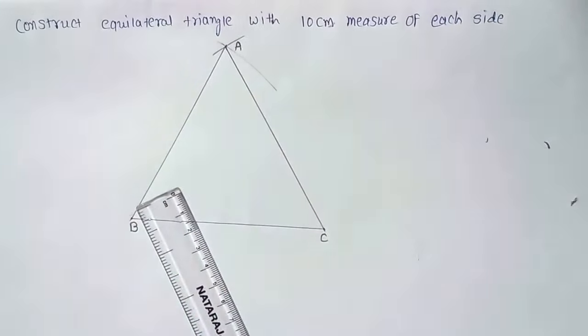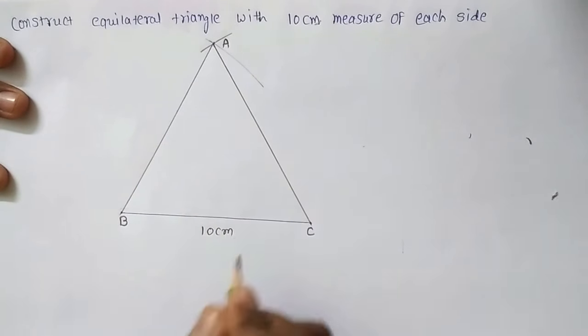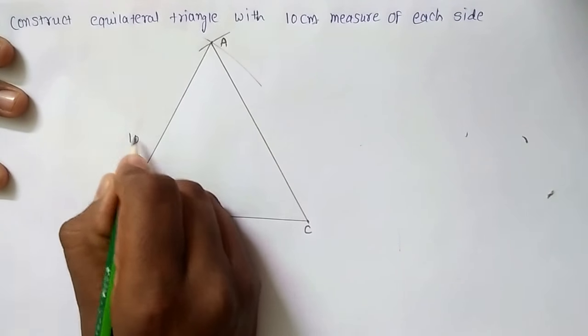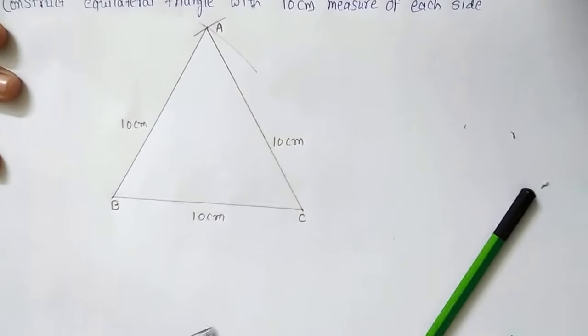Let us see. So this triangle will be having measure as we have already taken. This is 10 cm. Here also we have taken 10-10. So this will be also of 10 cm measure. And this will also be the 10 cm measure. Let us check it.